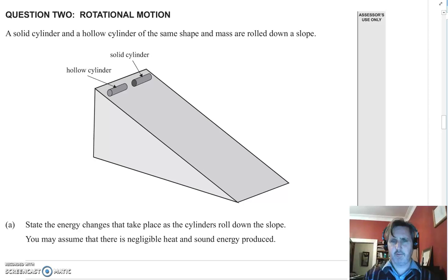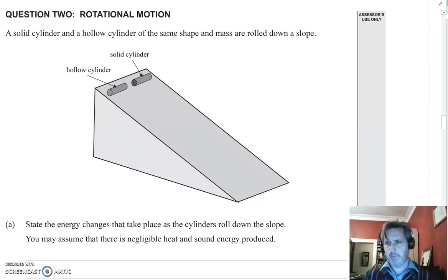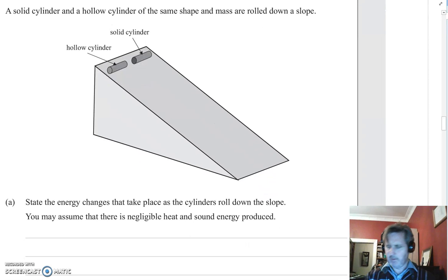This is the second question from the paper, and it was all about rotational motion. We have two cylinders rolling down a ramp or a slope. We need to state the energy change that takes place as the cylinders go down the slope. I assume that there is negligible heat and sound, which means no energy is lost as heat and sound, there's no friction.